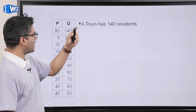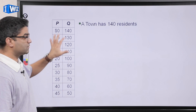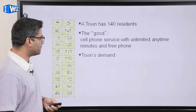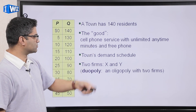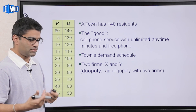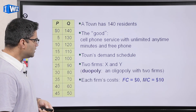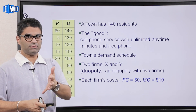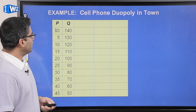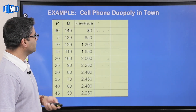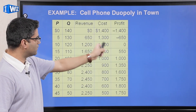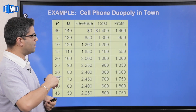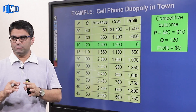Let's say we have a city of 140 residents with a market demand schedule showing price and quantity — as price goes up, fewer people buy the good. We'll look at cell phone service provided by two companies, X and Y. For simplicity, assume fixed cost is zero and marginal cost is 10. Profit equals price minus MC times quantity. Revenue is price times quantity. I've given you the cost data and the first two columns — pause the video, think about what the outcome would be under perfect competition and monopoly, then come back.